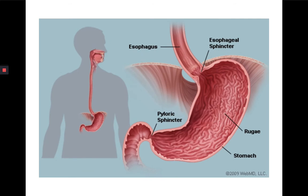Here's a picture of the stomach. As you can see, it's lined with mucus and that protects it from the acid inside, and there are two sphincters — one at the top called the esophageal sphincter and one at the bottom called the pyloric sphincter. These allow the food to come into the stomach and then go out once it has been turned into chyme.